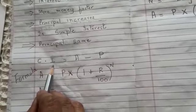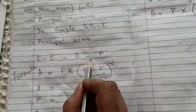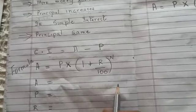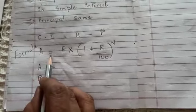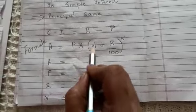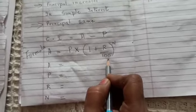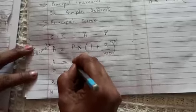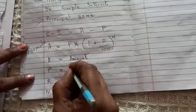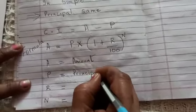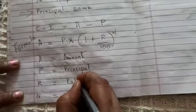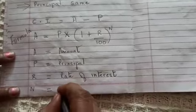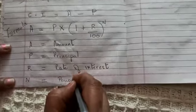Compound interest is the amount minus the principal. The formula to calculate compound interest uses: A is equal to P multiplied by (1 plus R upon 100) the whole raised to the power of N. Here A is the amount, P is the principal, R is the rate of interest, and N is the period, that is the number of years.